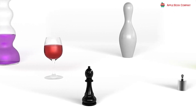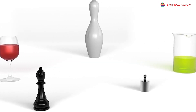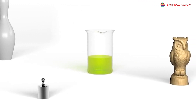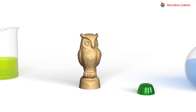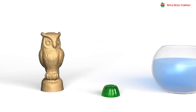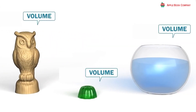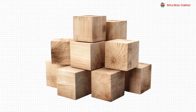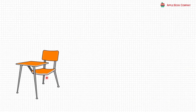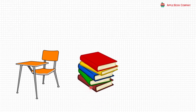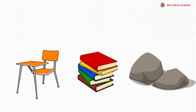Just like everything has a weight, everything occupies space. The amount of space taken up by an object is called its volume. For instance, a block of wood takes up a certain amount of space, which is determined by its size. All objects on Earth, whether they are big or small, take up some space.